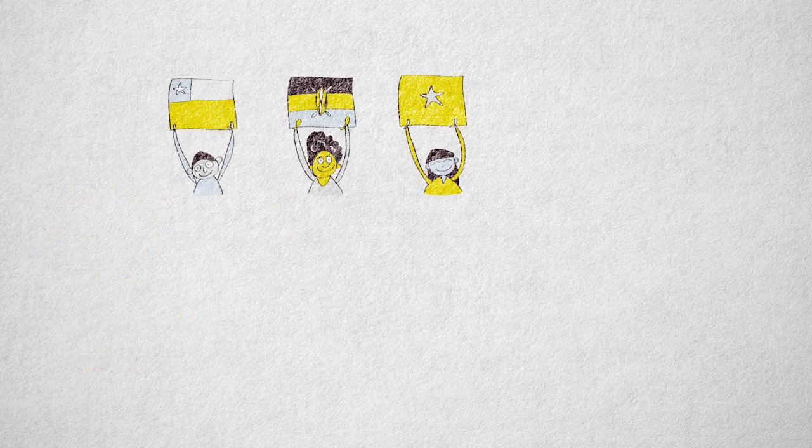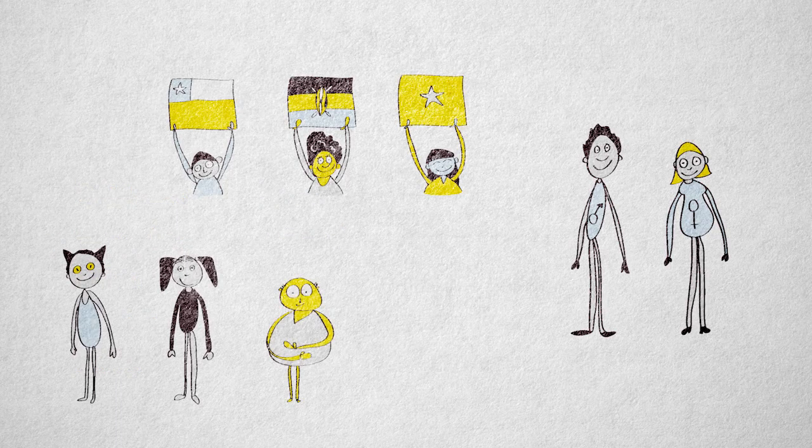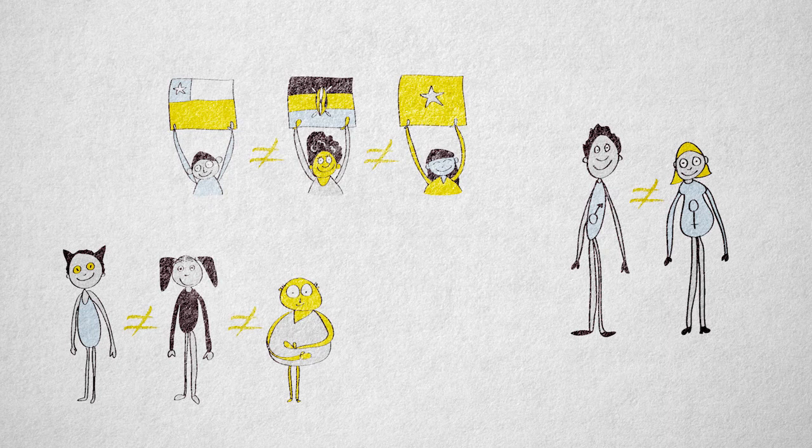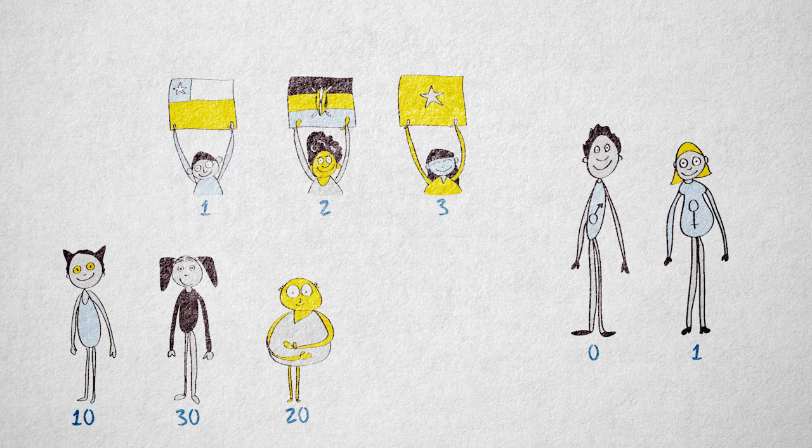Examples are nationality, sex, or pet preference. A German has a different nationality than a Brit. Women are of a different sex than men. Dog people have a different preference for pets than cat people or hamster people. One value doesn't represent a greater degree of the property than any other value. They're just different.